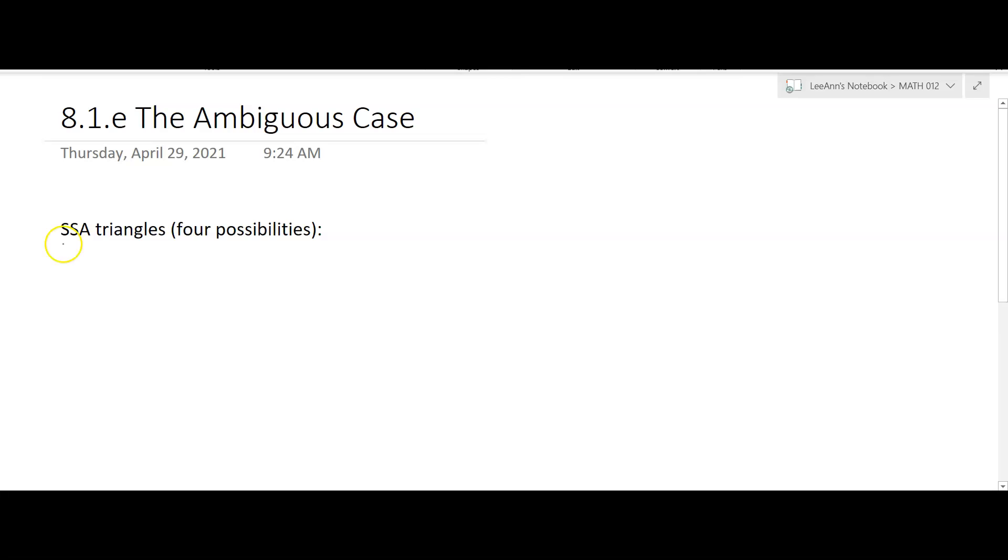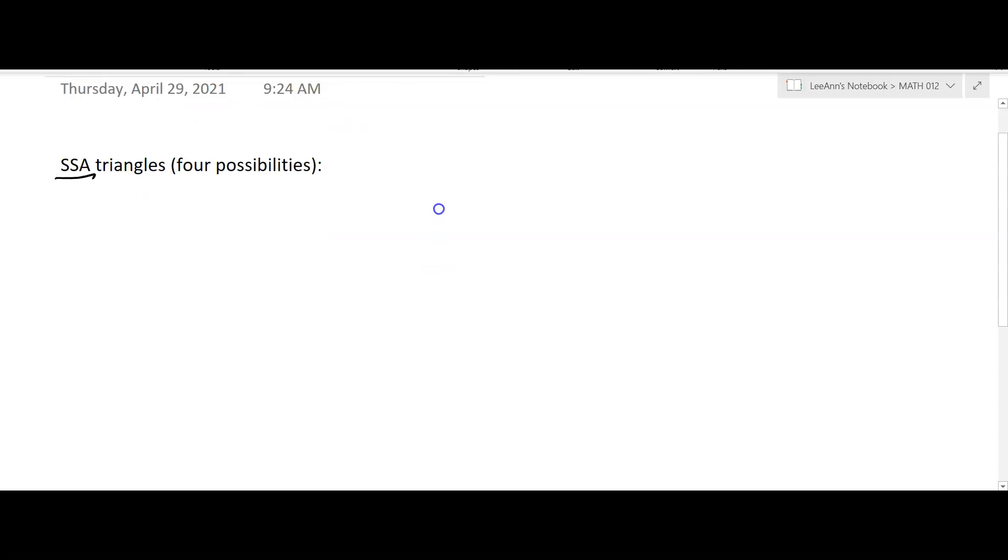So when you have side-side-angle, this is known as the ambiguous case, because you don't just necessarily have one triangle.